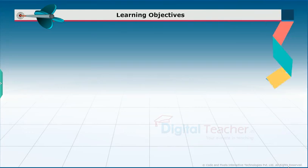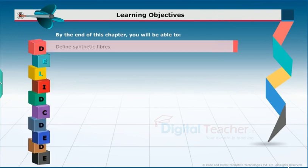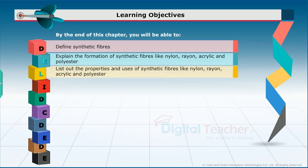Learning Objectives: By the end of this chapter, you will be able to define synthetic fibers, explain the formation of synthetic fibers like nylon, rayon, acrylic and polyester, list out the properties and uses of synthetic fibers like nylon, rayon, acrylic and polyester, and identify the different fibers by burning test.